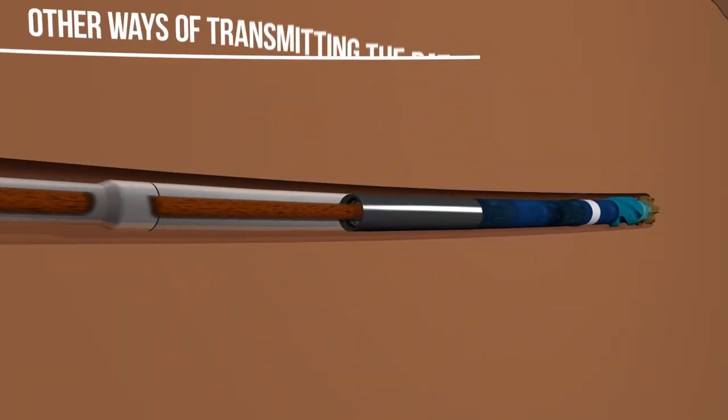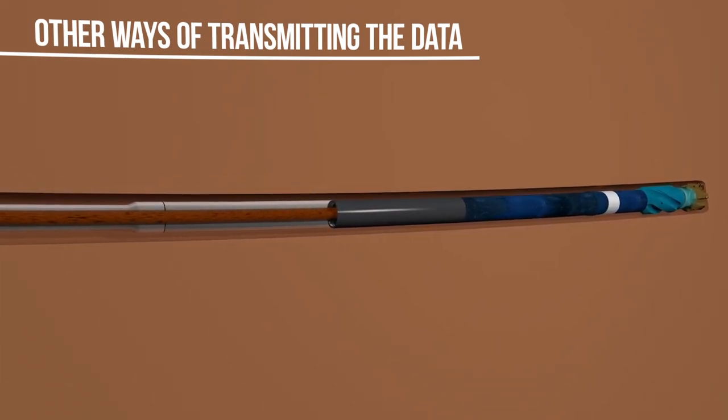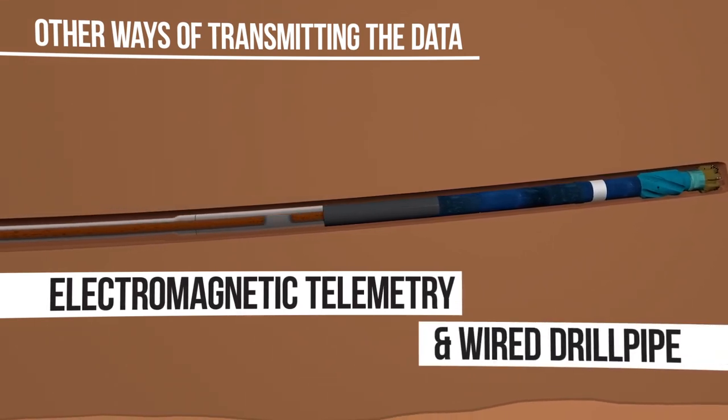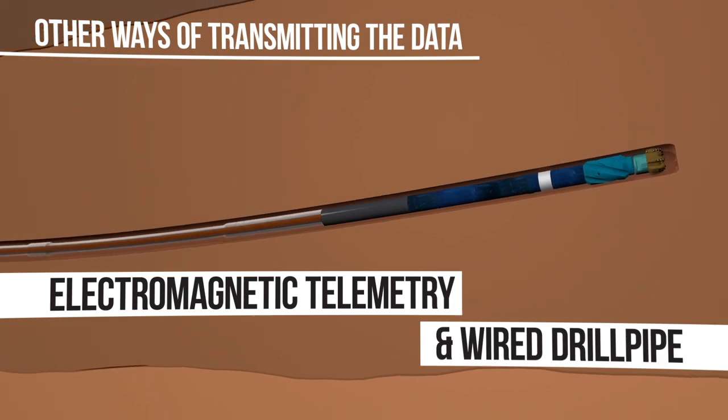There are other ways of transmitting the data from the tool to the surface, including electromagnetic telemetry and wired drill pipe, although these systems tend to have their limitations.